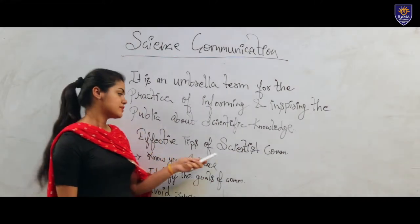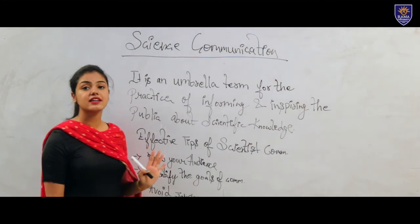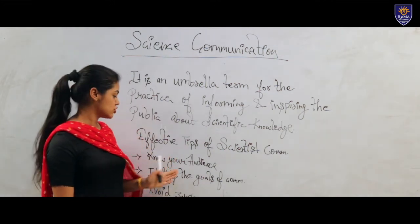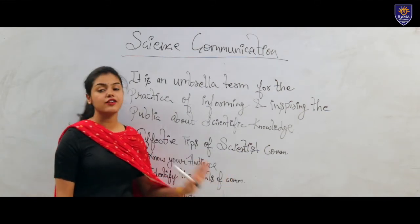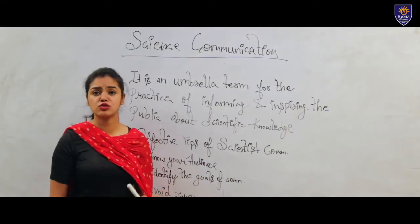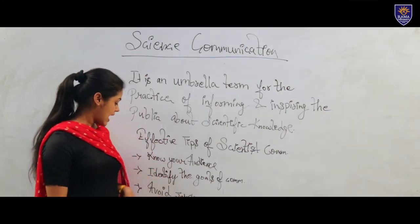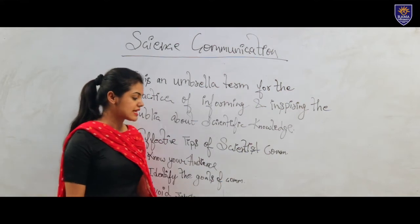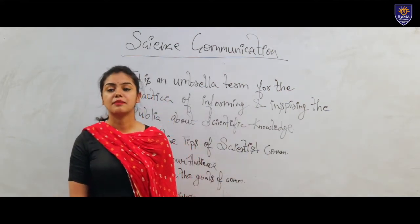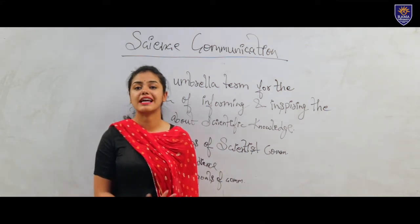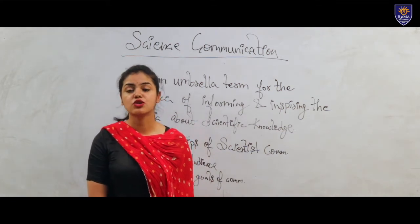These are the effective tips for scientific writing. First, while writing any scientific information, you have to know your audience. Next, identify the goals of communication — you have to know your goals while communicating. Third, avoid jargon. Fourth, talk about the scientific process — if we are doing science communication, you have to tell your audience and readers about the scientific process.